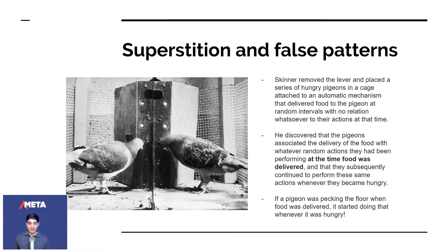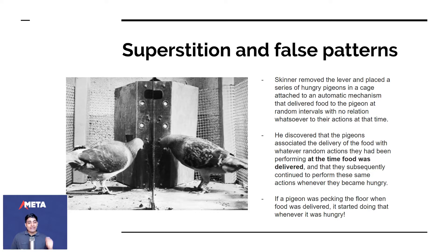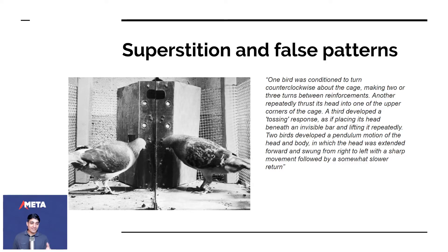After training the rats to use the lever, Skinner removed the lever and placed hungry pigeons in a cage attached to an automatic mechanism that delivered food at random intervals with no relation whatsoever to their actions. Food was put in randomly — maybe every 15 or 20 minutes. He discovered that the pigeons associated the delivery of the food with whatever random action they were doing at the time. So if they were spinning clockwise, they'd start attributing getting food to spinning clockwise. If a pigeon was pecking the floor when food was delivered, it started doing that whenever it was hungry.